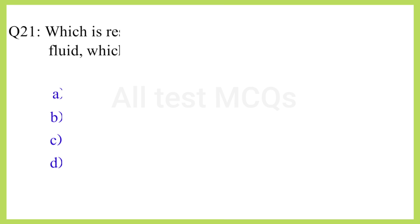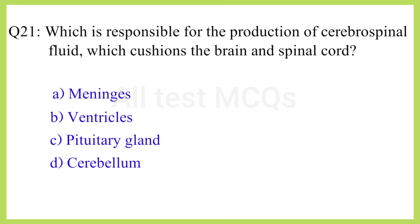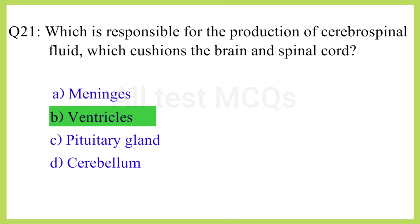Q21. Which is responsible for the production of cerebrospinal fluid which cushions the brain and spinal cord? The correct answer is option B: Ventricles.